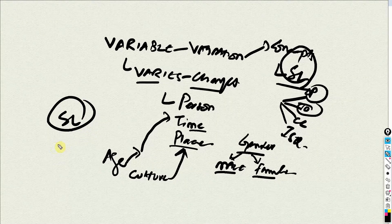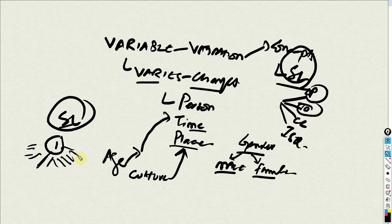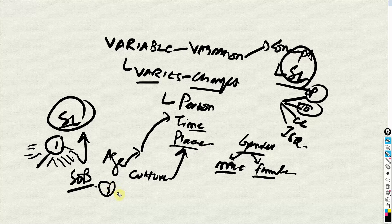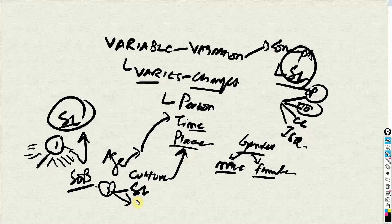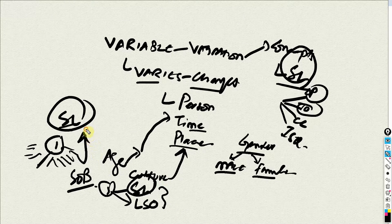Why is servant leadership a variable? Let's say we have an organization with one leader and multiple followers. Each follower may have a different opinion about whether the leader is displaying servant-oriented behaviors. One person may think the leader is purely servant-oriented, while another follower may think he is least servant-oriented. There is variation in perception of servant leadership among the followers — that is why servant leadership is a variable.